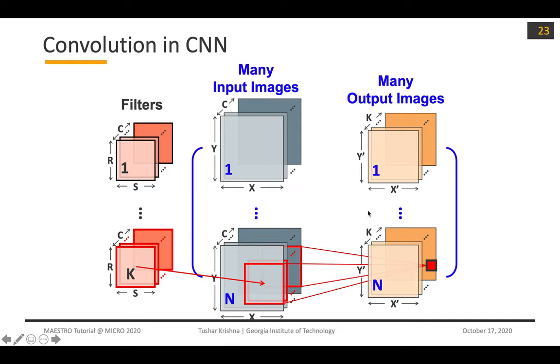At a high level, you can view this as seven loops that are running across the input dimensions, the channel dimension, the filter dimensions, and the batch dimensions. This loop nest is something we're going to keep coming back to multiple times in this tutorial.